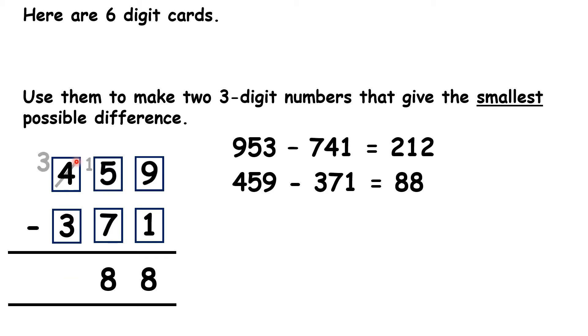But because we already understand regrouping, we don't need to show that here. But it might give us a clue as to how we might make our difference even smaller than 88. What digit cards could we change next? Well, if we're keeping 4 and 3 in our hundreds, we could rearrange the other digit cards to make the smallest number possible that's over 400, and the largest possible number that's under 400.